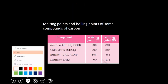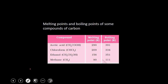With the help of this table, I would like to show you the melting and boiling points of some carbon compounds. Acetic acid has a melting point of 290 K and boiling point of 391 K. Chloroform has a melting point of 209 K and boiling point of 334 K. Ethanol has a melting point of 156 K and boiling point of 351 K. Methane has a melting point of 90 K and boiling point of 111 K. So we can see that melting and boiling points of covalent compounds are lower than those of ionic compounds.